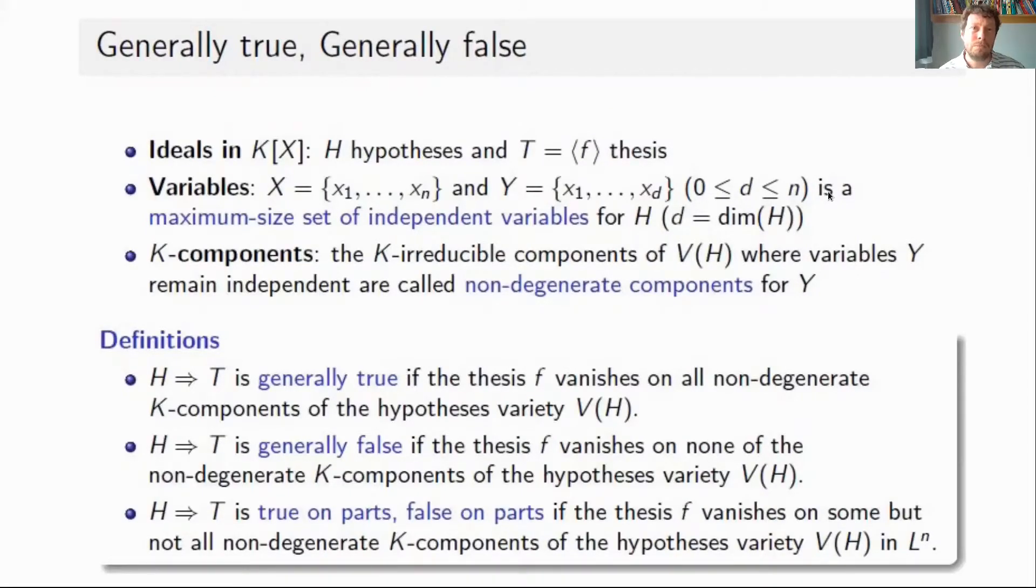In the next slides, we introduce more detail on the theoretical background. Generally true and generally false are well-known definitions in algebraic geometry, but we introduce a different notion that extends these in a natural way. We consider the set H of hypotheses, the properties of the figure, and the thesis T, which is one polynomial. We have variables in X and Y, and assume there is a maximum size set of independent variables for the hypothesis ideal, denoted by D.